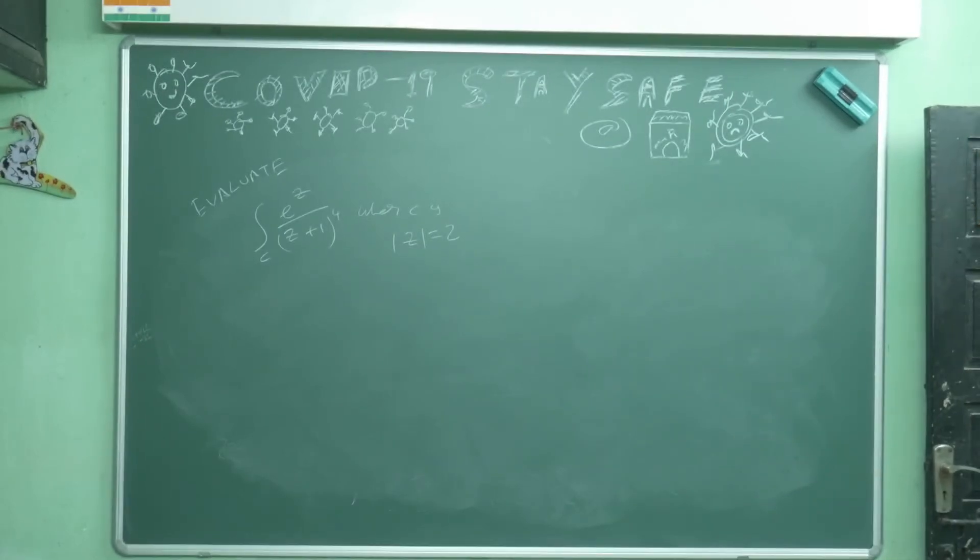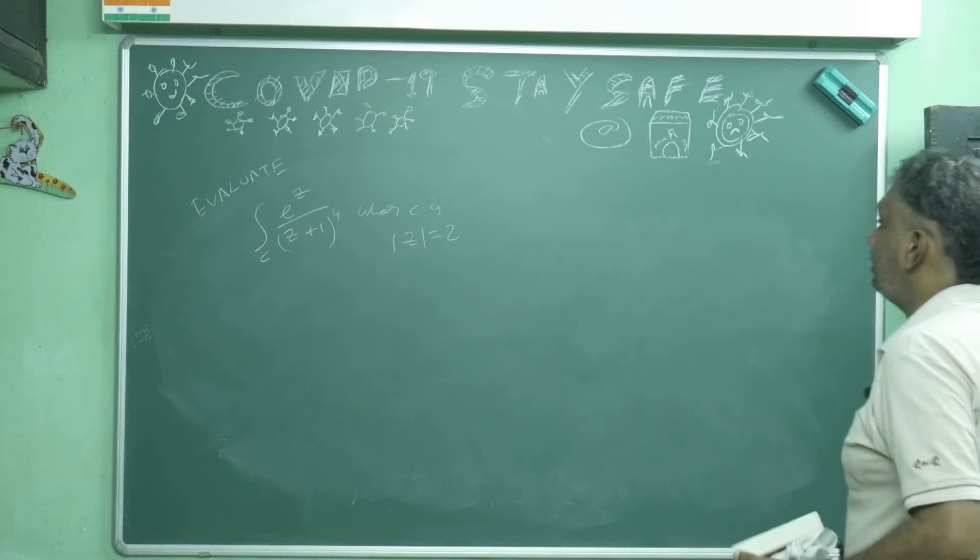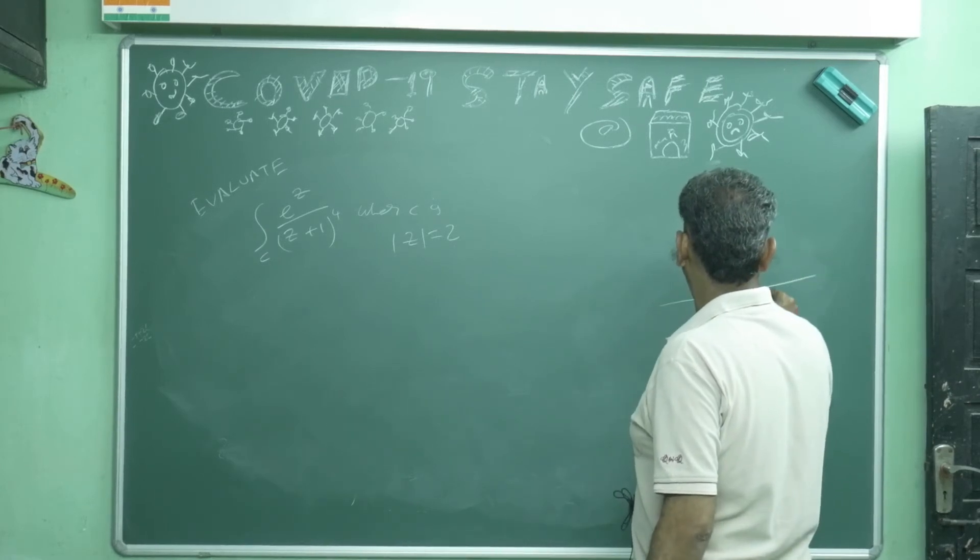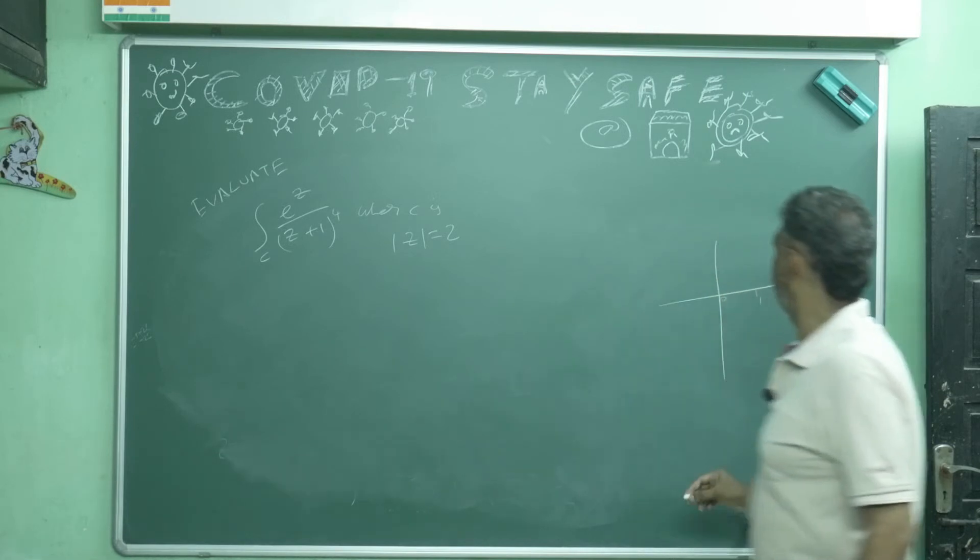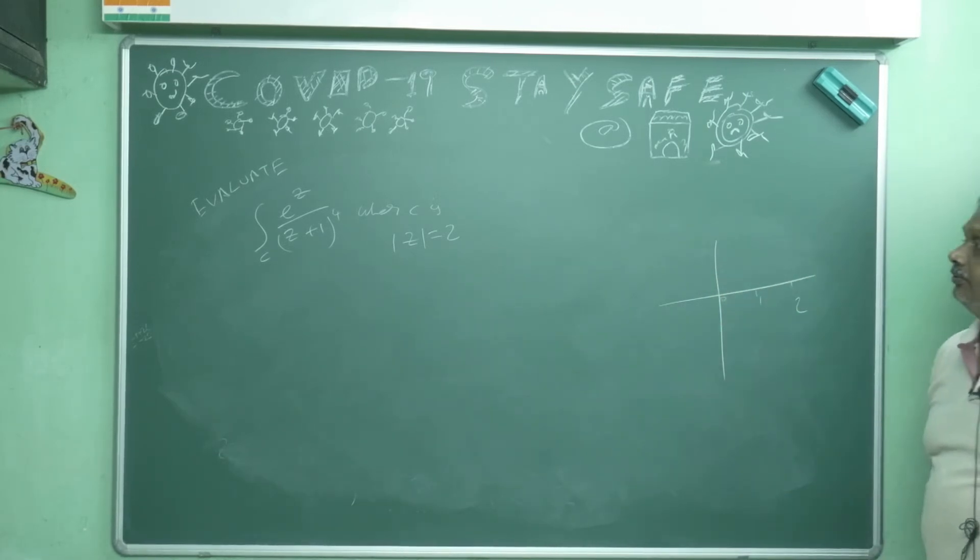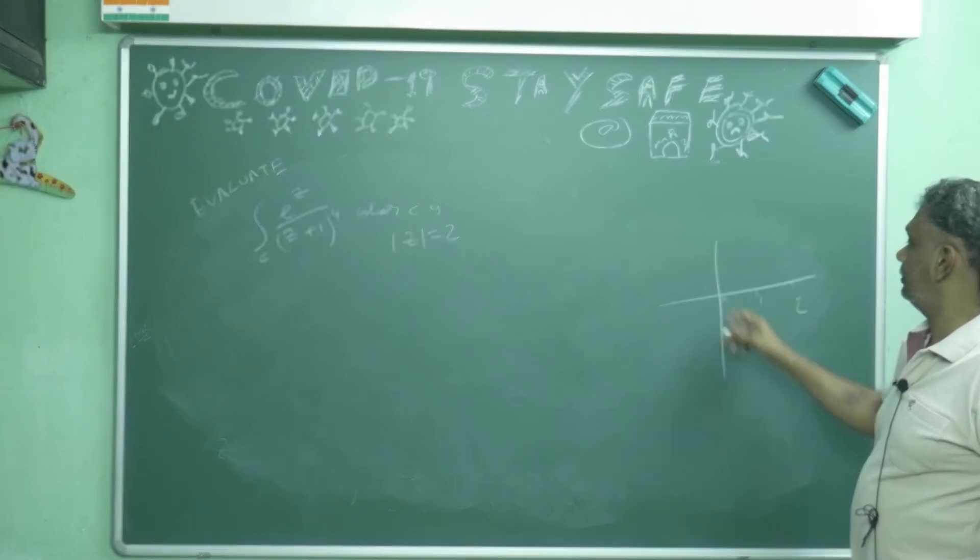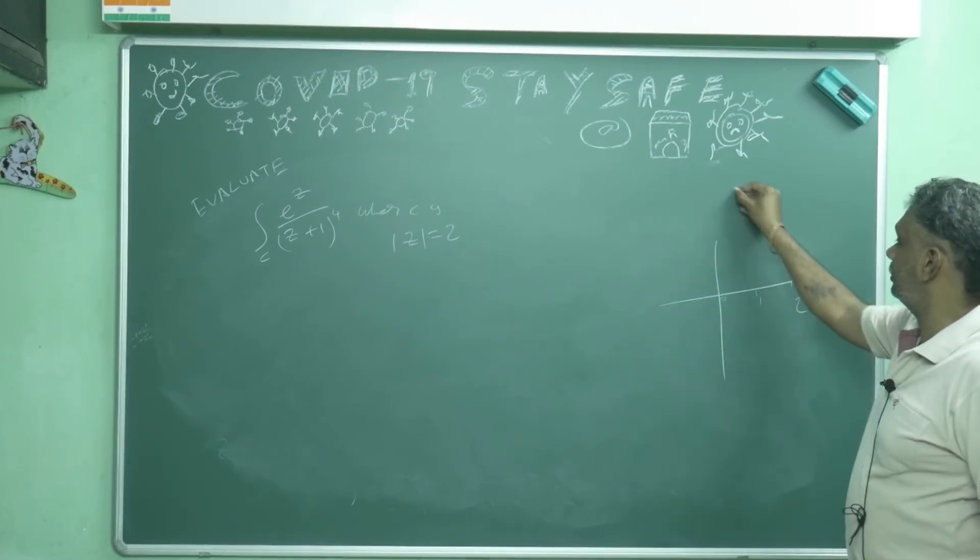See this problem also very good. Evaluate the integral over c, e power z divided by z plus 1 whole power 4, where c is modulus z is equal to 2. So modulus z is equal to 2 means center at 0, radius is 2. This is also minus 1, minus 2, 1, 2. If you give circle, you will get a big circle.